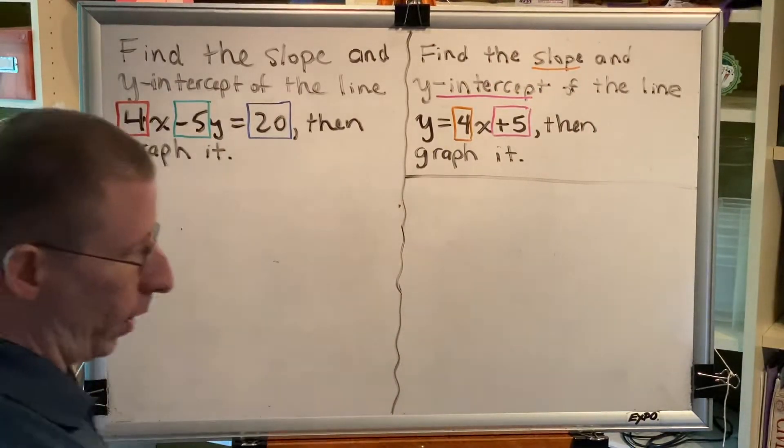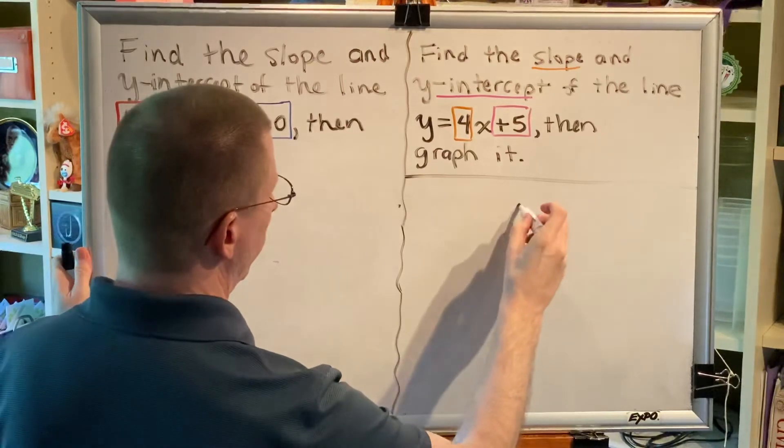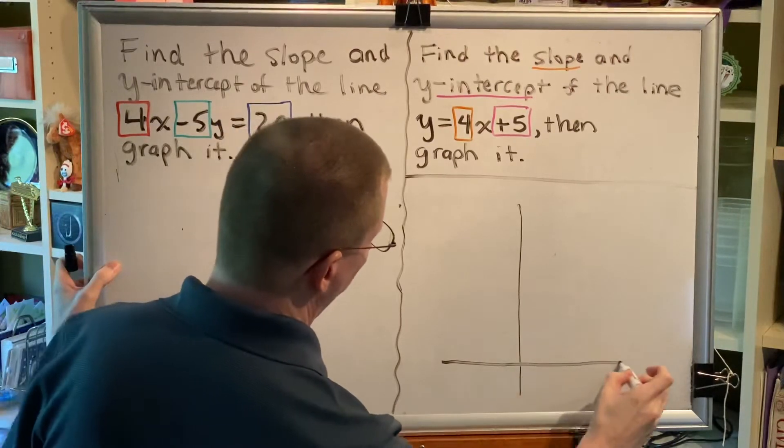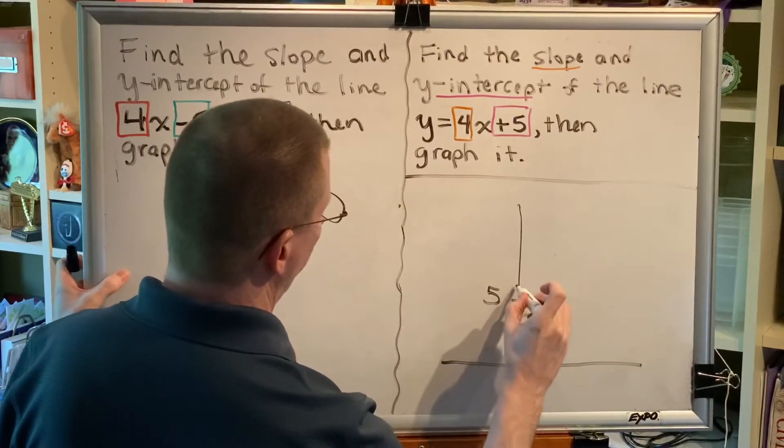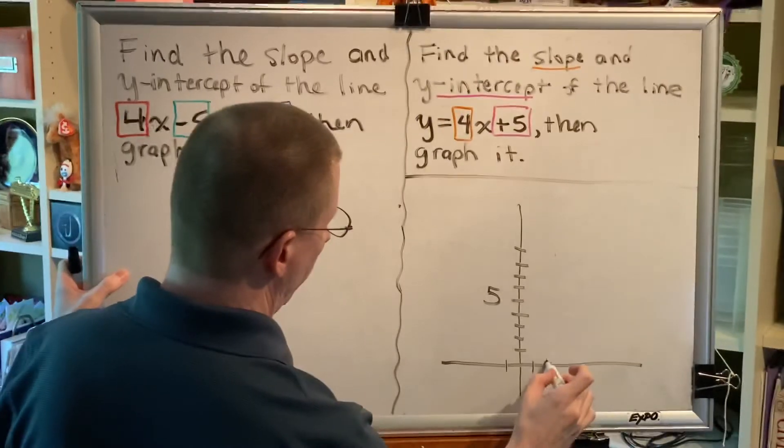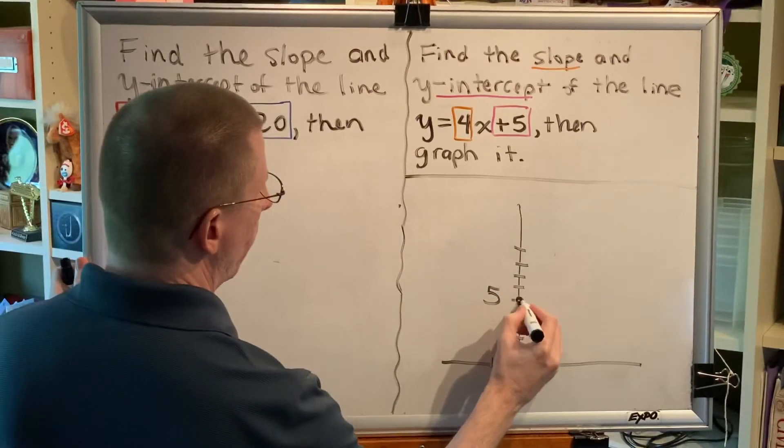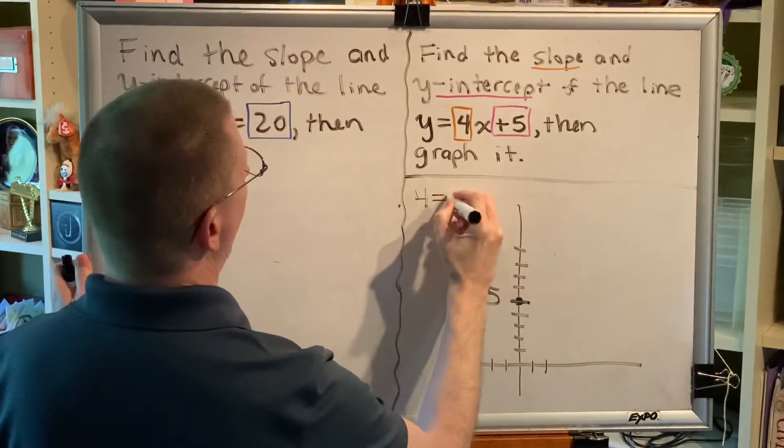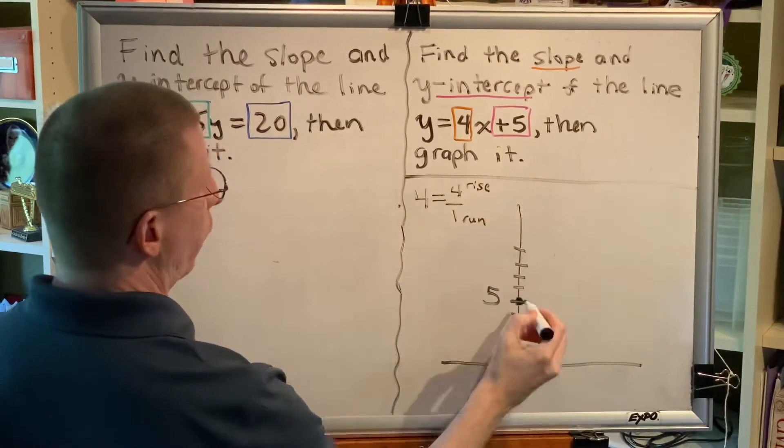This allows us to very quickly and easily create the graph of our line directly. So, let's do that. We begin by plotting the y-intercept of 5. Then, we recognize that 4, which could be written as 4 over 1, is telling us our rise and our run. So, from this intercept, we go up 4: 1, 2, 3, 4, and over 1, and we put a point.